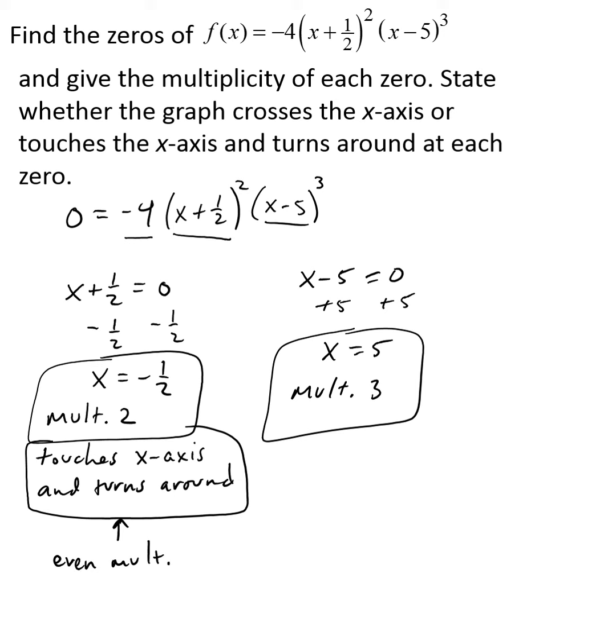Okay, an odd multiplicity would indicate that the graph crosses the x-axis. So our multiplicity of three here tells us that our graph would cross the x-axis at x equals five. And so again, that's true for any odd multiplicity.